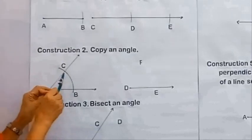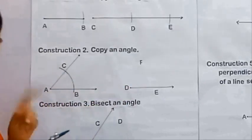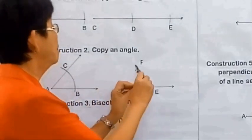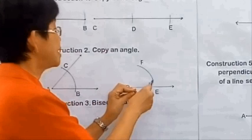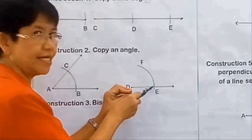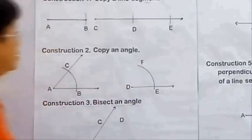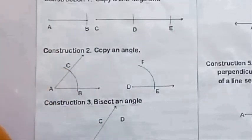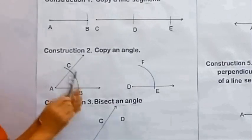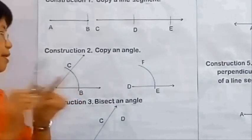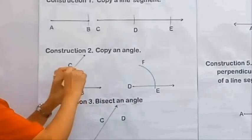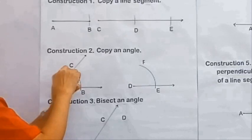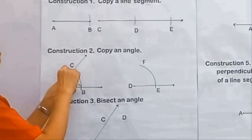From point B, we also swing an arc intersecting DE at E. Then we measure the arc DC using the compass. With the compass point at point B, we adjust the compass and swing an arc at C.